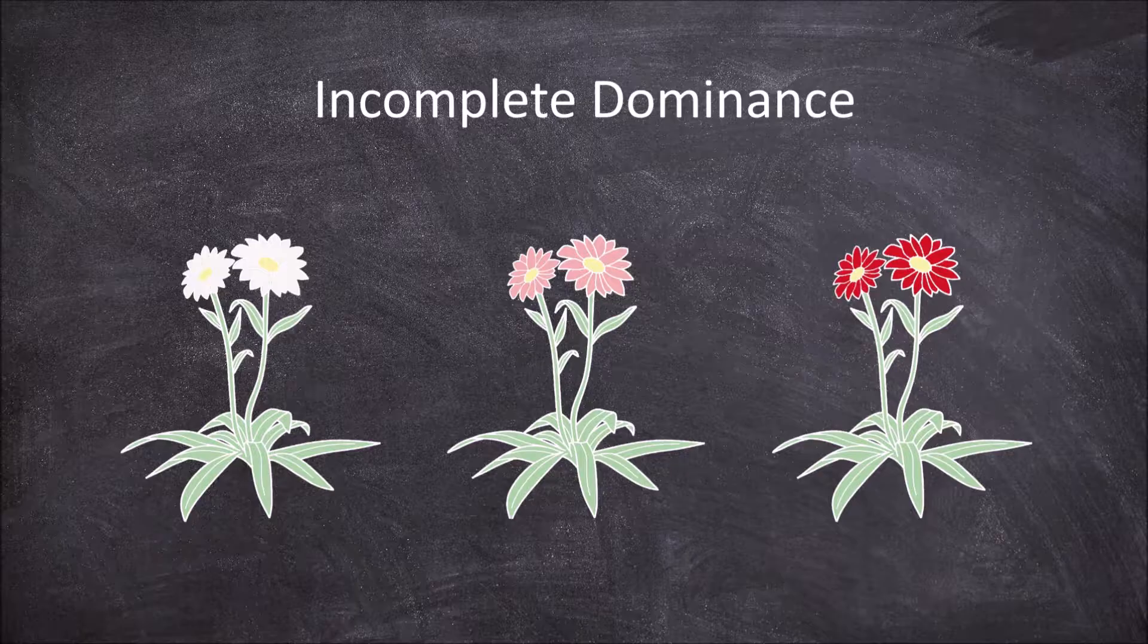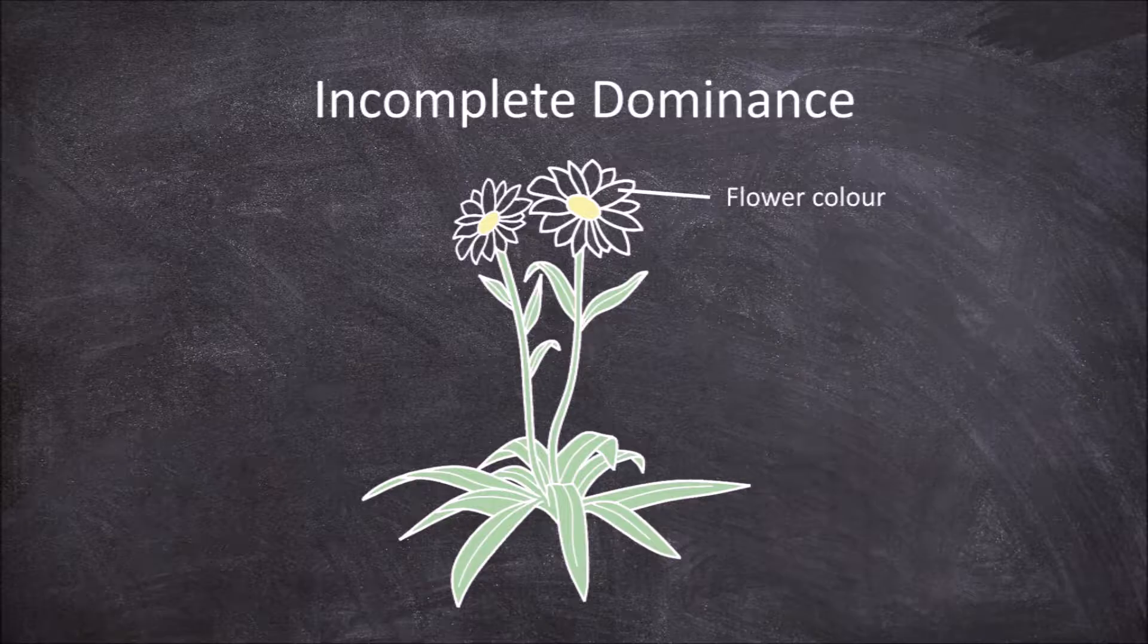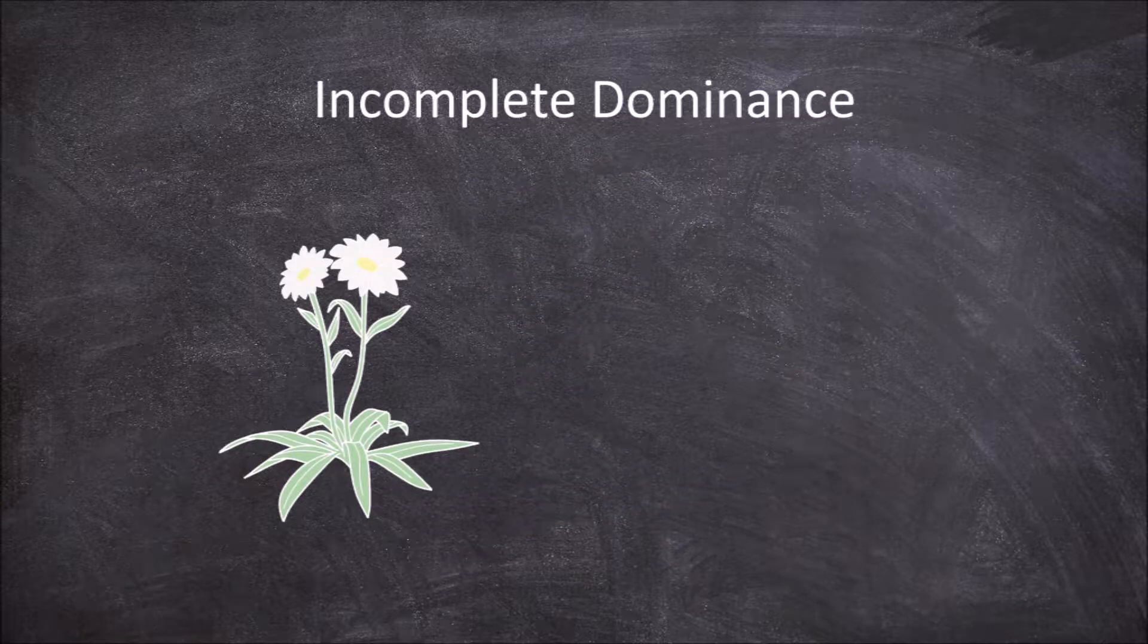For example, if we have a plant and look at the specific trait of flower color, this trait has two possible variants called alleles: white flowers or red flowers.